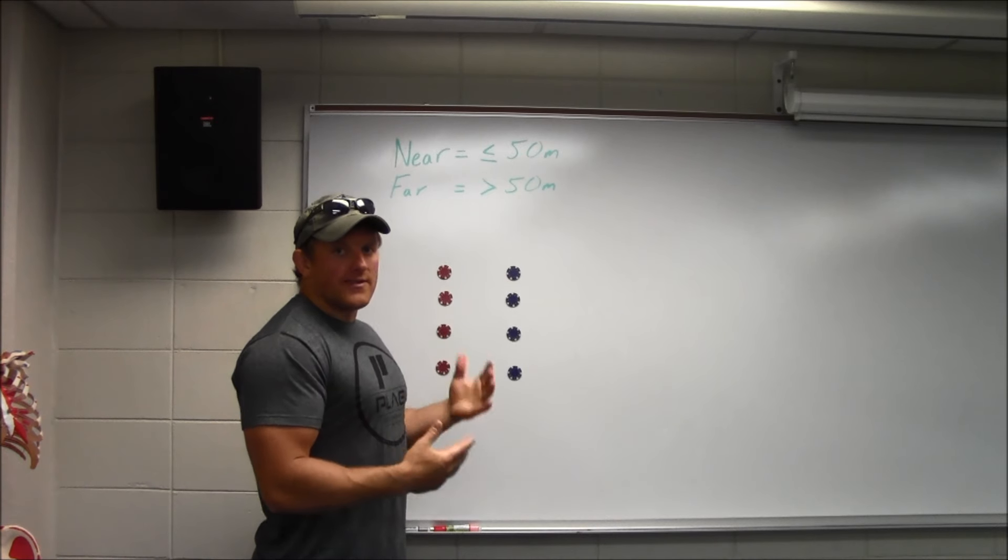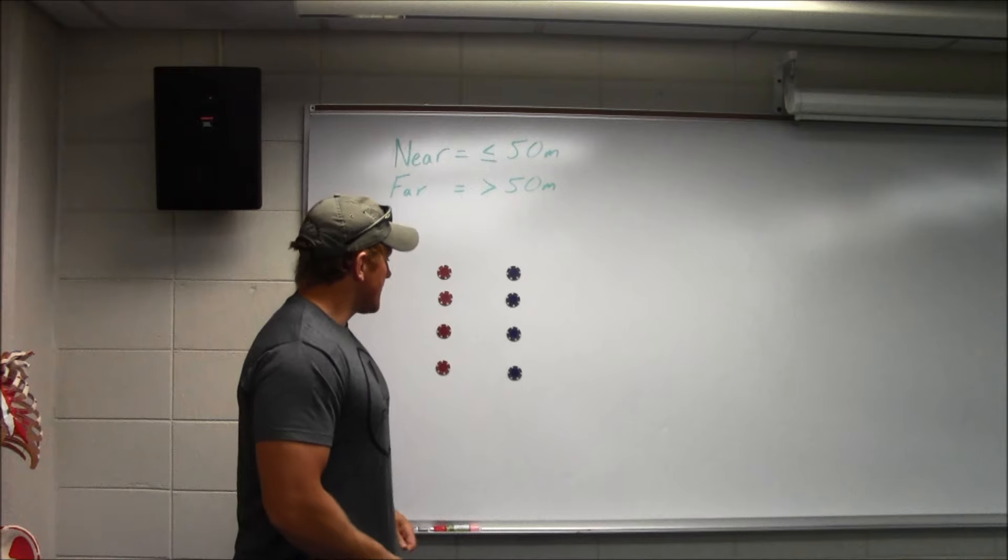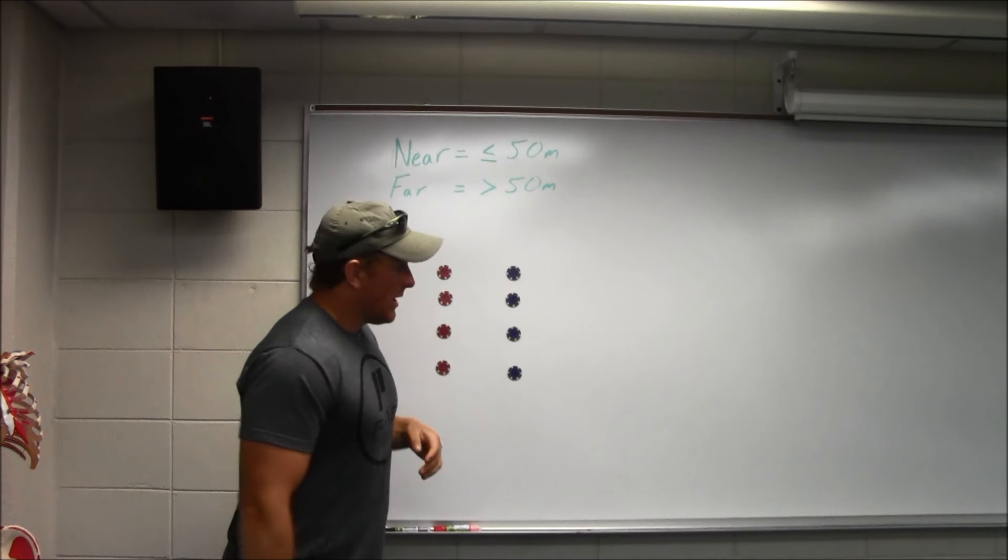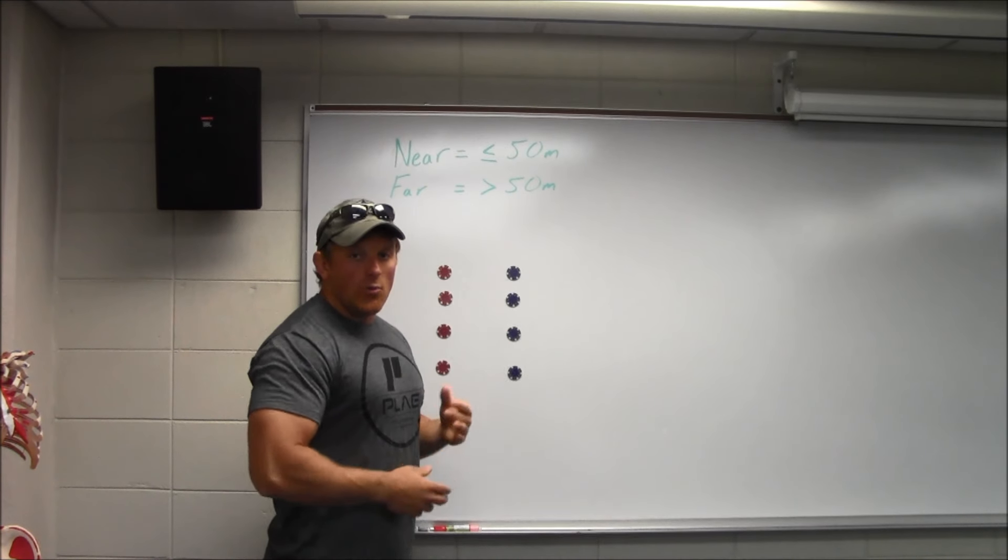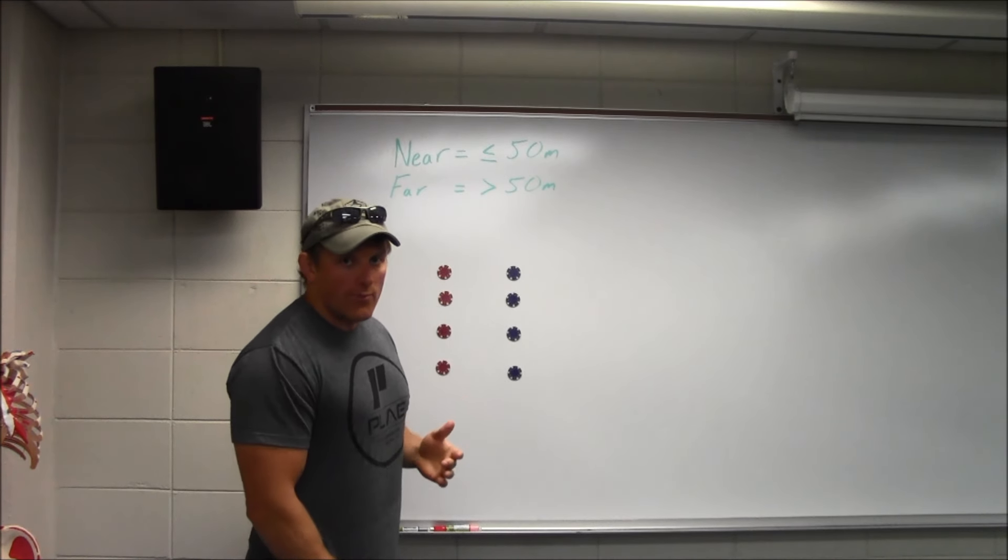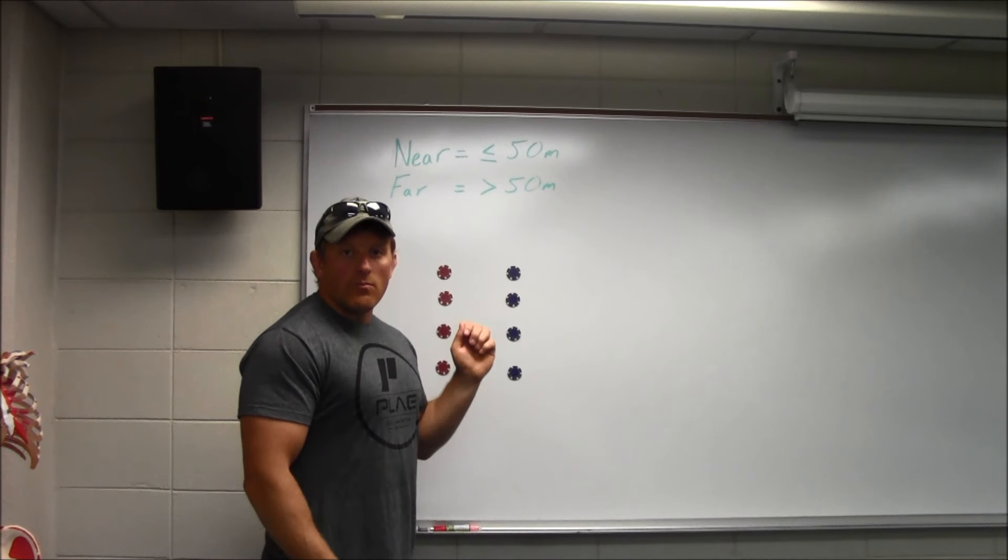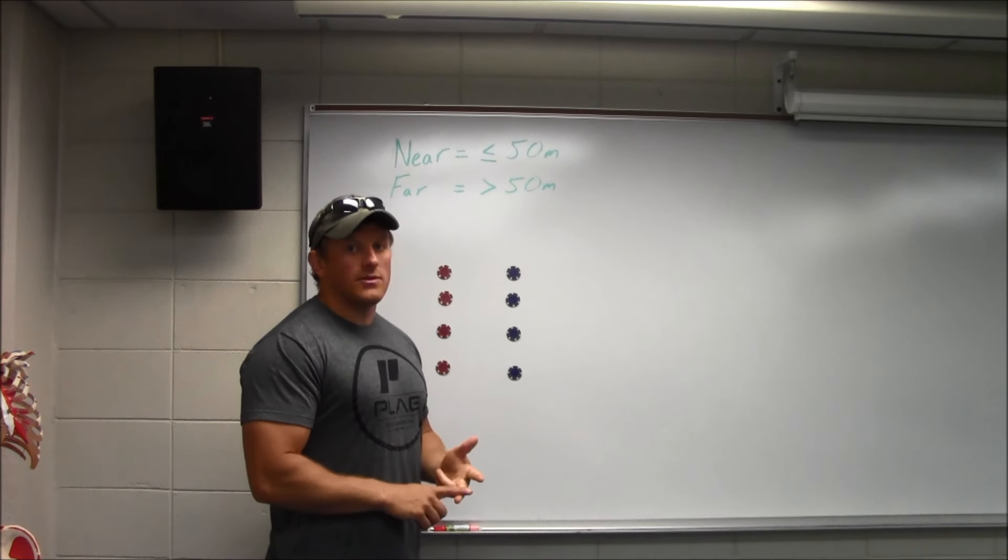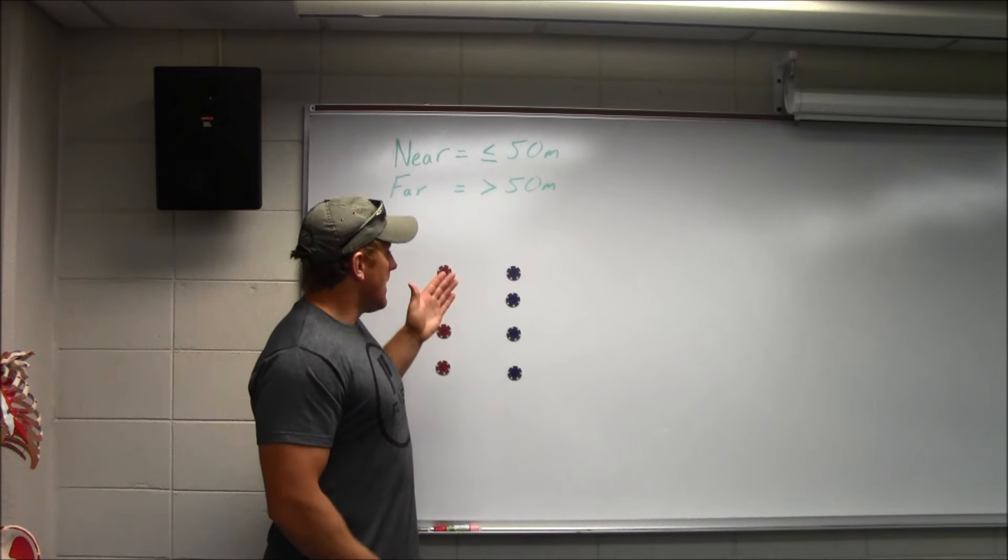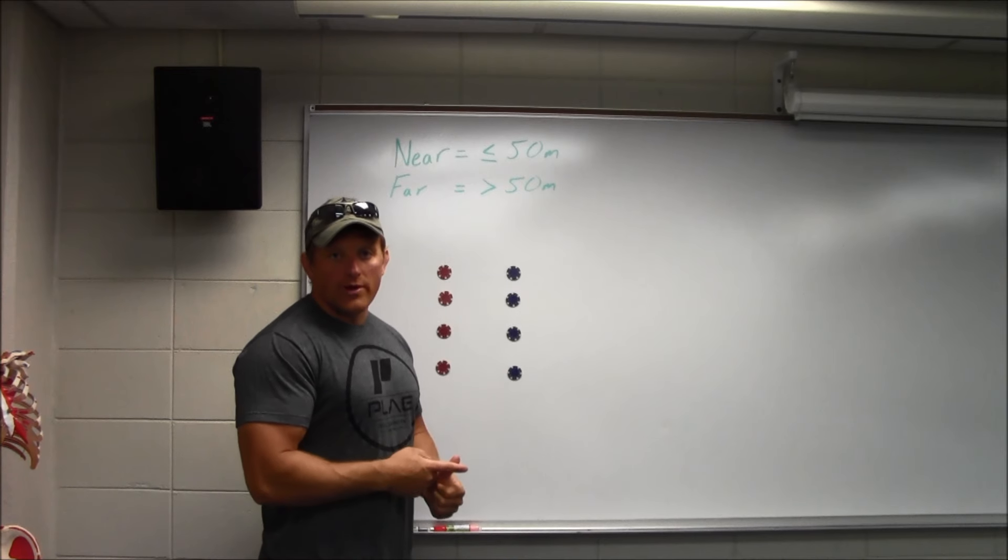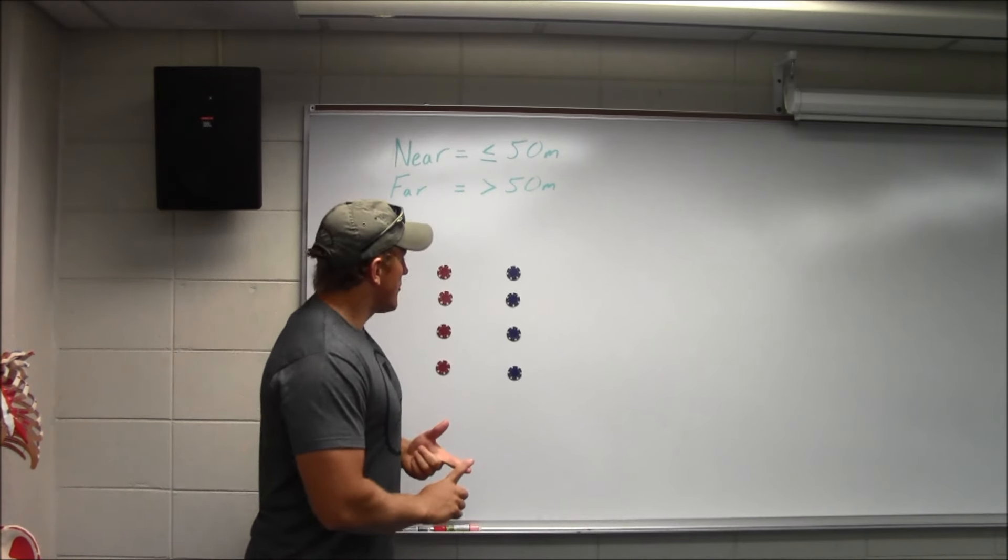We're talking about breaking contact. We'll talk about the most basic way to do it first. So we're here with a small unit, a Marine Corps fire team, four dudes. They take contact and we decide we need to break contact. The way this always starts, no matter what method we're using, is the team leader is going to give a break contact command with direction and distance. He can go left, right, or back. So he's going to say break contact rear 300 meters.